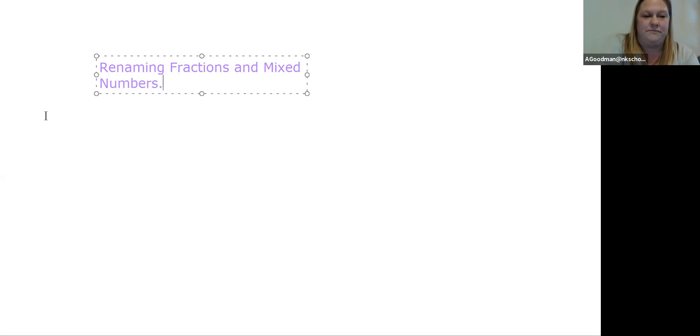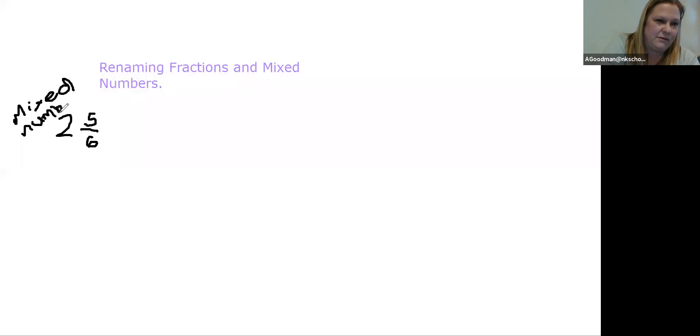All right. So what it's saying is that say you have a fraction like two and five sixths, and it's asking you to take, remember that this is called a mixed number. This is a mixed number. That's what it's called when it has a fraction and a whole number next to each other, the whole number first and the fraction.